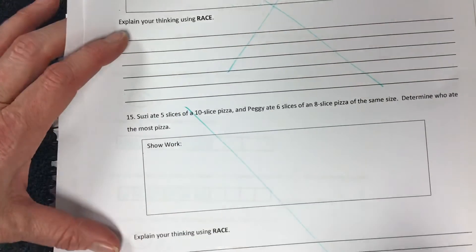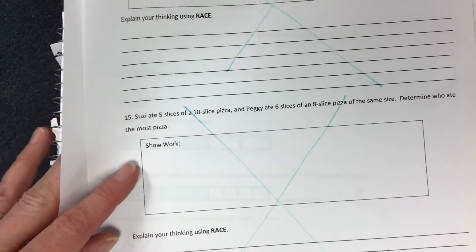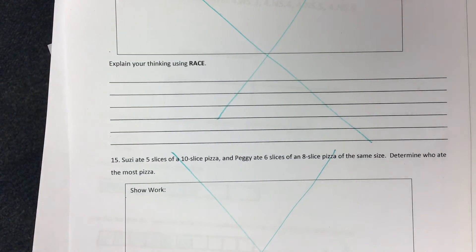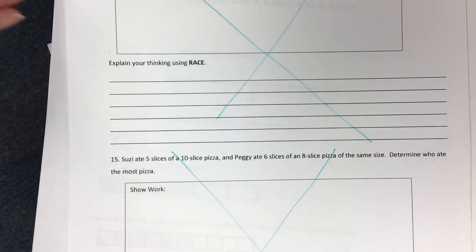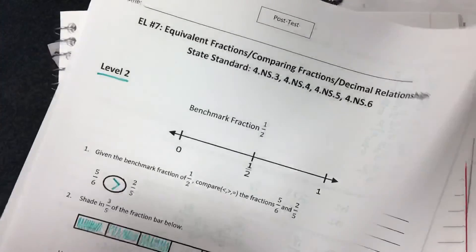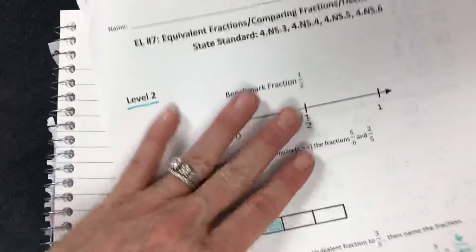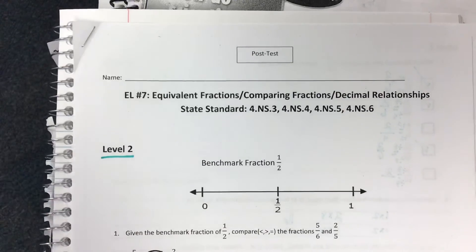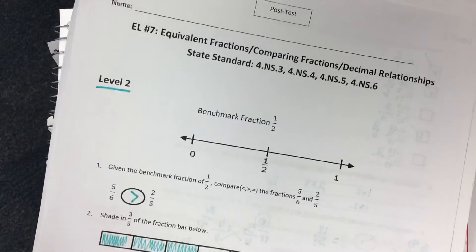On tomorrow's test, there will not be any level four questions. Level four questions are things they will learn in fifth grade. Some students are ready for these, but on a redo test we only focus on the level two and level three questions. Feel free to send me an email if there's anything I can help you with. Please make sure to sign your child's test and have them bring it back to school tomorrow.